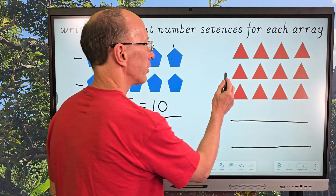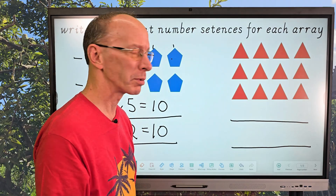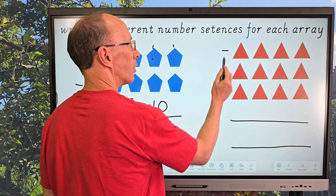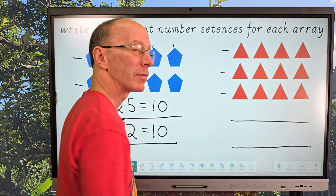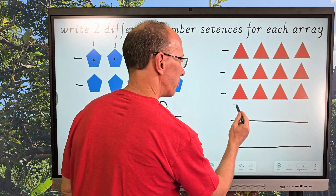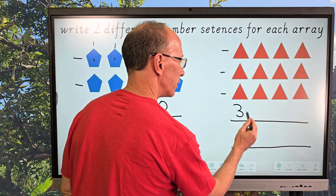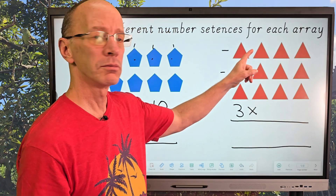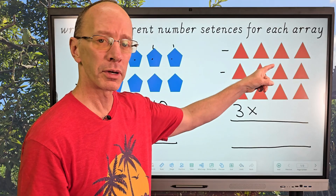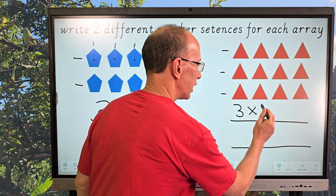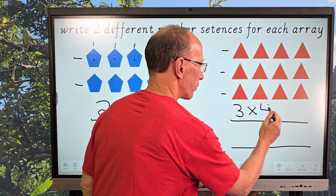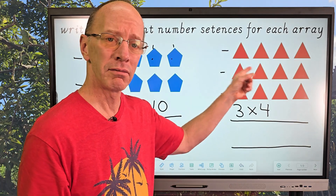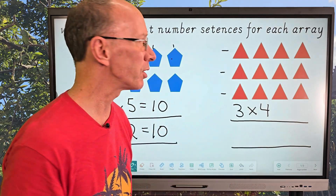I'm going to do the same thing with multiplication. I'll count my rows: one, two, three — three rows. And how many are in each row? Can you count that? One, two, three, four. Good job! So three times four. If you don't know what three times four is, just go ahead and add up all the triangles.